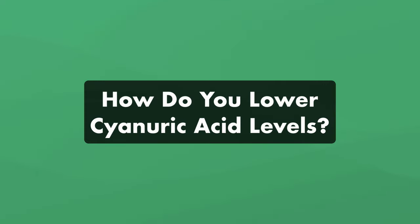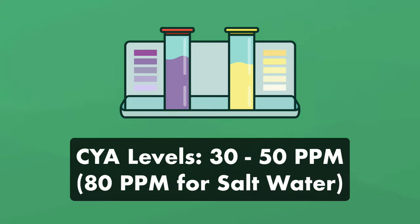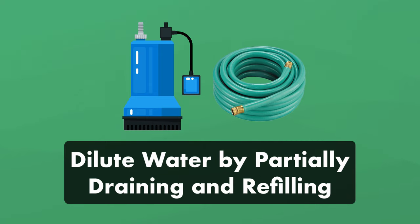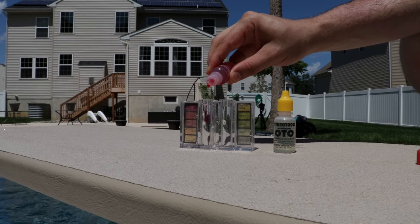So how do you lower cyanuric acid levels? Ideally, your cyanuric acid levels should be between 30 and 50 parts per million, and around 80 parts per million if you have a saltwater pool. If your levels are way too high, you'll need to dilute your water by partially draining and refilling your pool with fresh water. Diluting your water is the most effective way to lower your CYA levels.